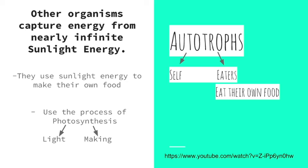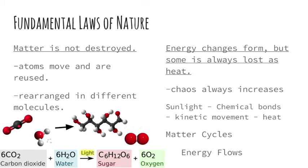Luckily, there are other organisms that are not heterotrophs that capture energy from a nearly infinite sunlight energy. They use that sunlight in order to make their own food. They're called autotrophs. Auto means self, troph means eaters — they eat their own food that they make. And the way they make their own food is through a process of photosynthesis. Photo meaning light, synthesis meaning making — so they make food out of light. They don't actually convert light into food, but they're able to capture energy from light into molecular bonds, and those molecules can be rearranged into new molecules whose chemical bonds store energy from sunlight.